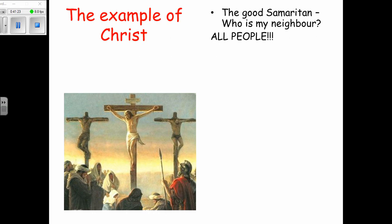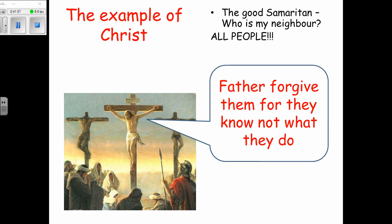A good example from the New Testament is the Good Samaritan. Someone asks Jesus who is my neighbor. Jesus tells the story: a man is mugged on the road, he is Jewish, and two Jewish priests walk away because the law says don't touch a dead body. The person who helps is a Samaritan, and Samaritans were enemies of the Israelites. Similarly, when Jesus says 'Father forgive them for they know not what they do,' Jesus forgave his enemies — that was agape love.